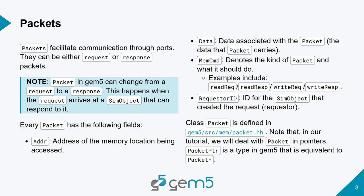If you want to find the memory commands, you have to go to source/mem/packet.hh. There's also a requester ID, which is a global ID for some object that requested or sent the packet. The class packet is defined in packet.hh under gem5 source/mem.